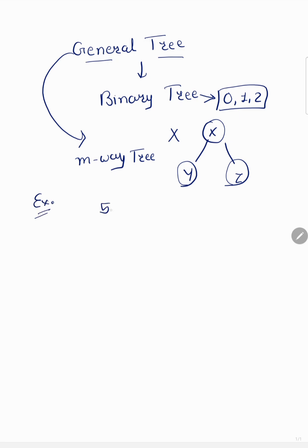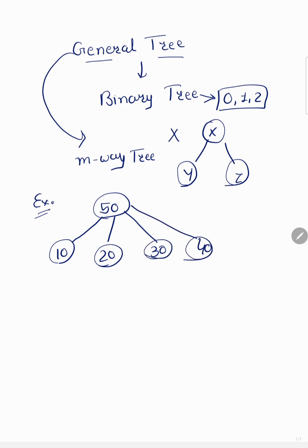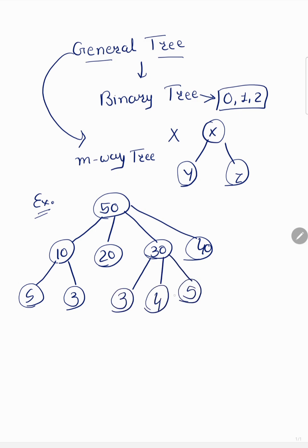Let me give you an example of a general tree. Suppose we have node 50 as the root, having four children. Regardless of order — it's not a binary search tree where we consider ordering. Node 10 has two children, 20 has no child, 30 has three children, and 40 has one child. This is a general tree.